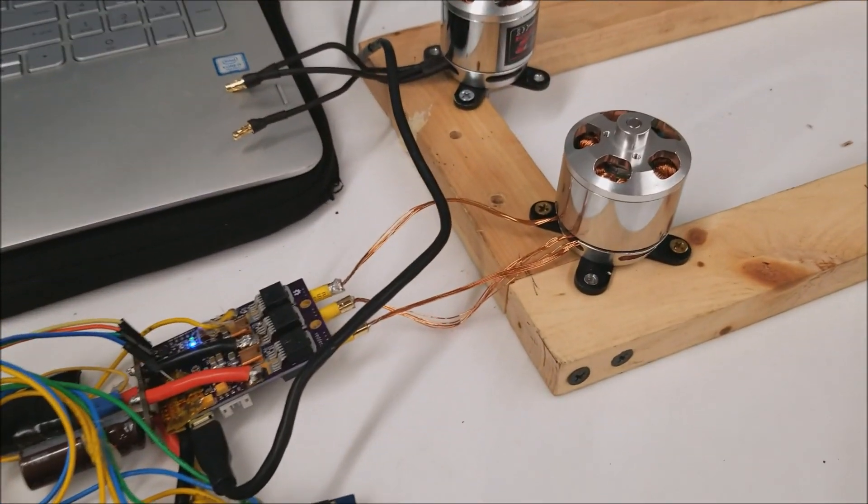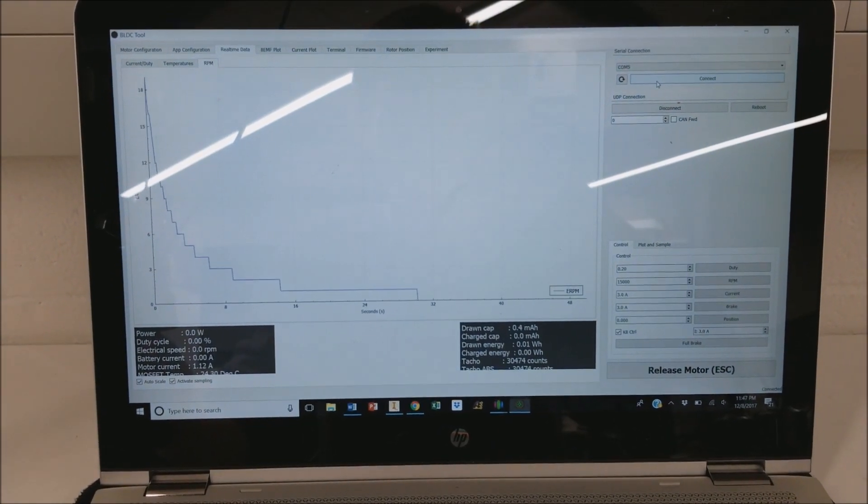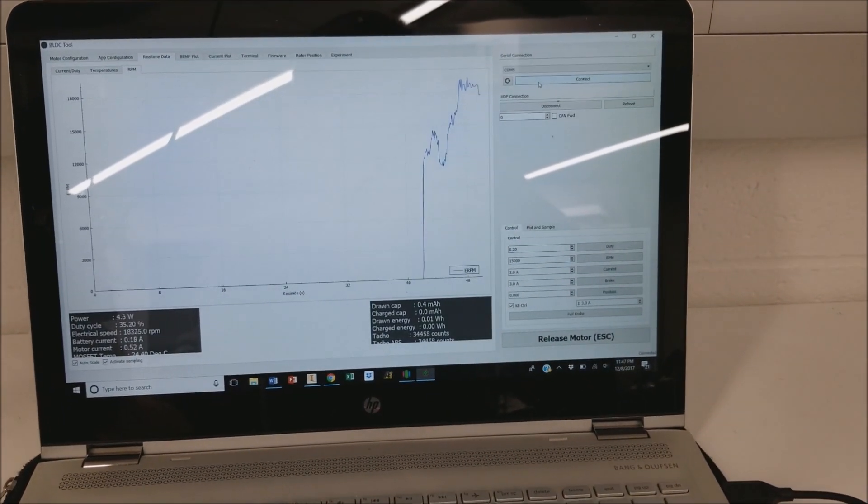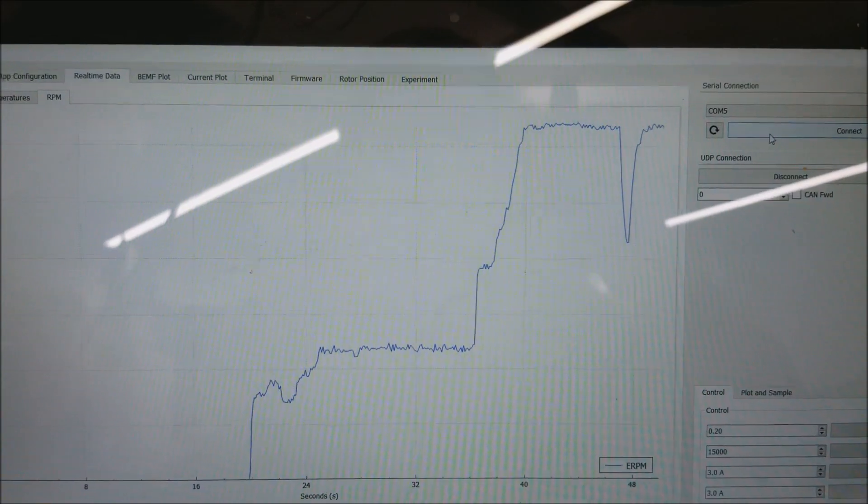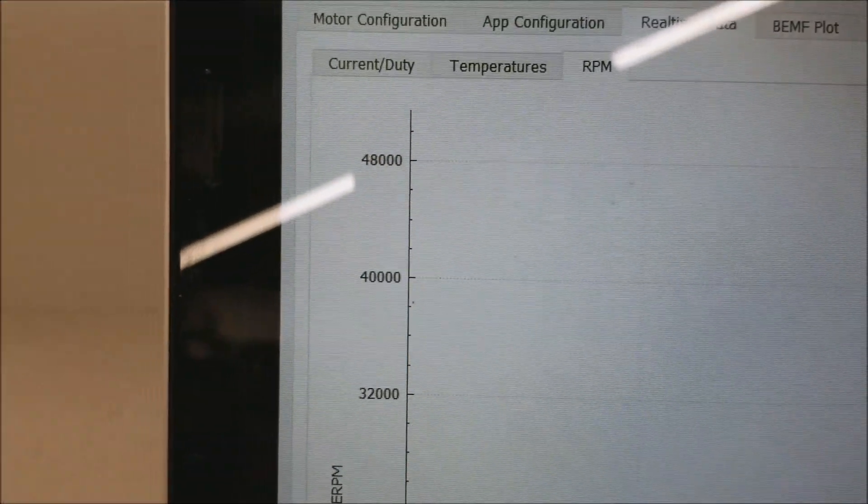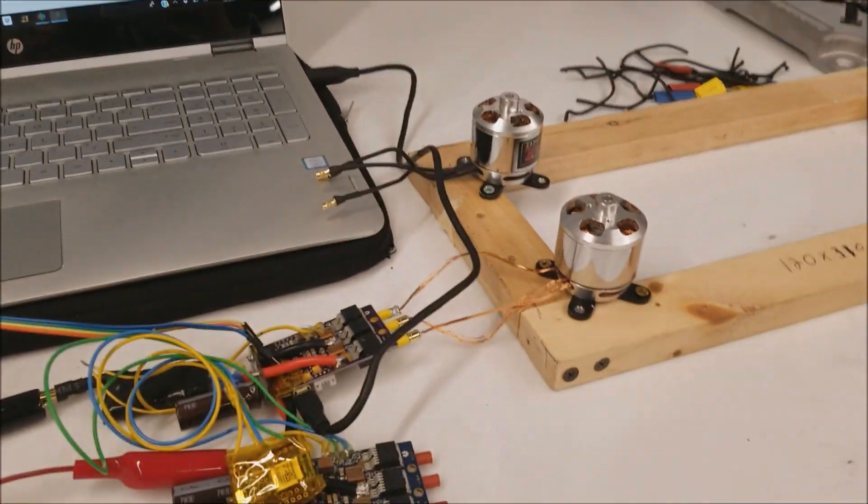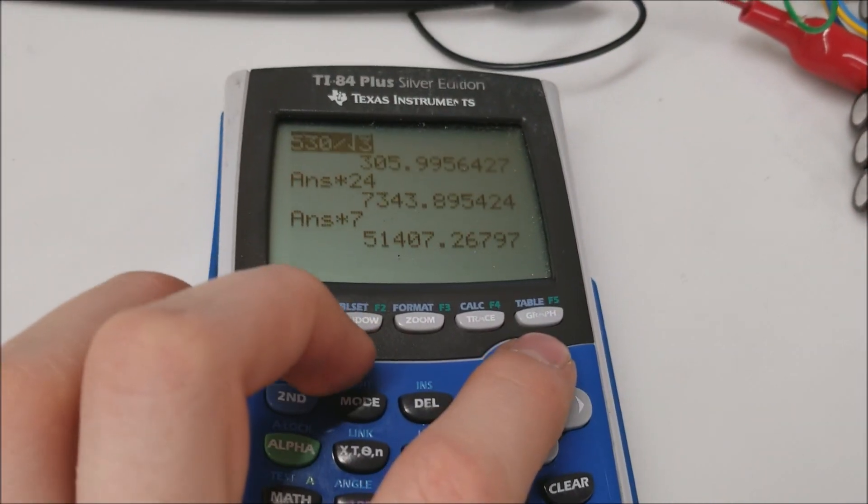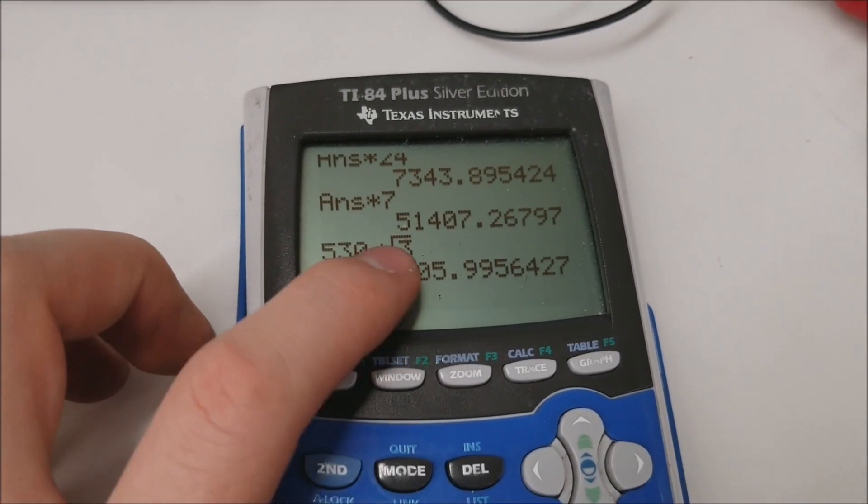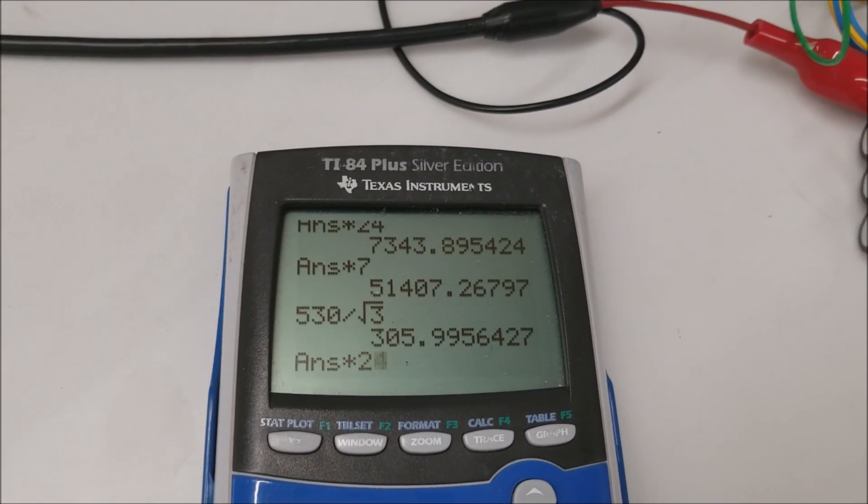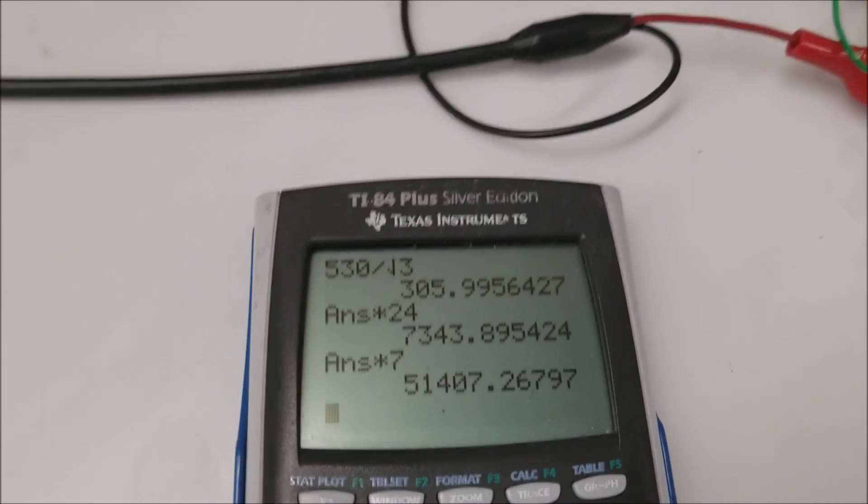I hooked up my re-terminated Y winding motor to the same setup as before. I have my software running here, so I'm going to test out the new max RPM. 50,000. Let's do some quick math. We had the 530 KV motor. I changed the winding, so now it's a Y winding divided by root 3, 305. 305 KV times 24 volts. That many RPM times the ERPM value. 51,000. Oh my god, it worked.